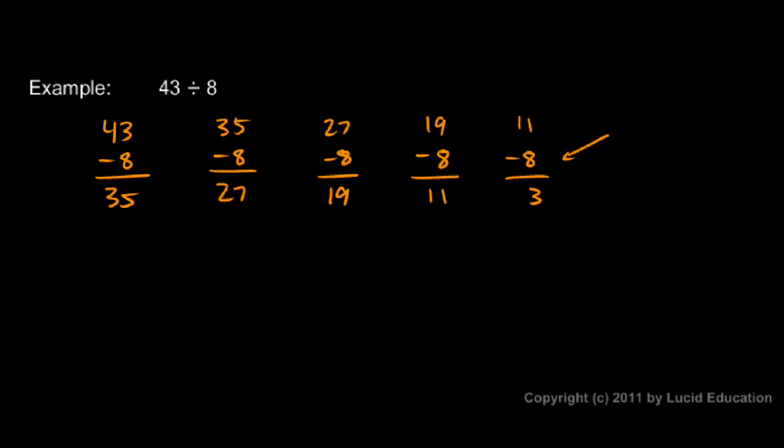So, we see here we subtracted 8 five times. So our answer is 5. And then I have 3 remaining. So my answer is 5 remainder 3. And that's how we write it. The little r stands for remainder.